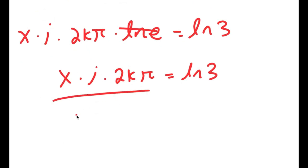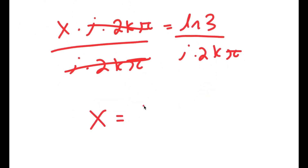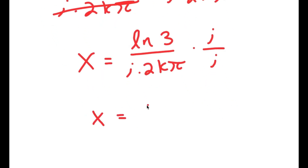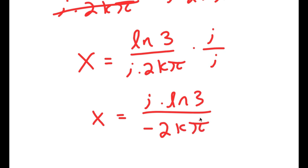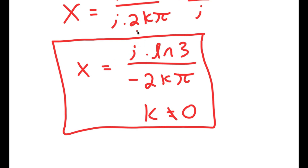Now I'm going to divide both sides by i times 2k pi. So these cancel out and I get x is equal to ln 3 over i times 2k pi. Now I'm going to multiply this by i over i. So I get x is equal to i times ln 3 over i times i, which is i squared. And i squared is equal to negative 1. So x equals i times ln 3 over negative 2k pi. And k cannot equal 0, because if k were 0 this wouldn't work. So this is my solution to this equation.